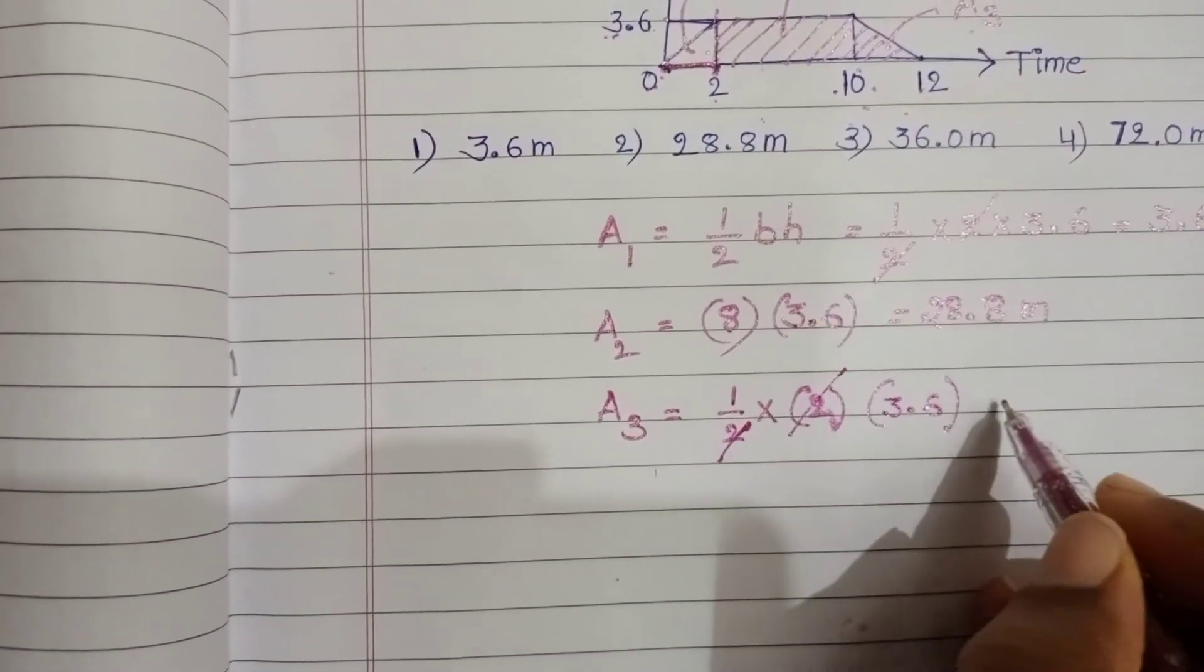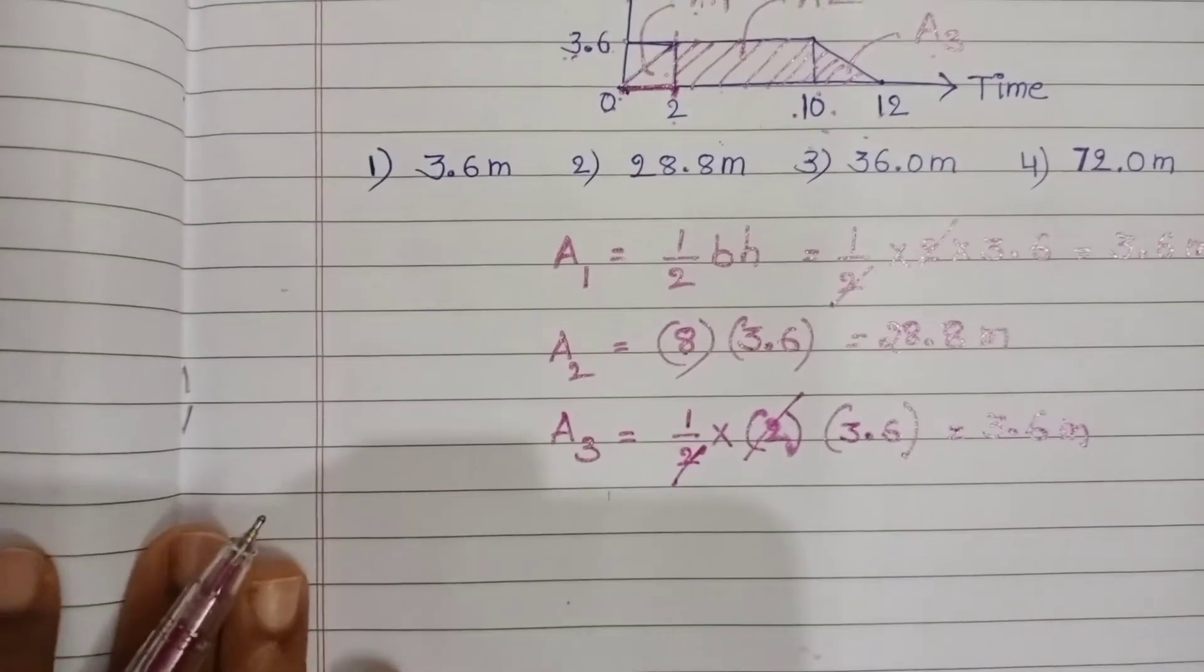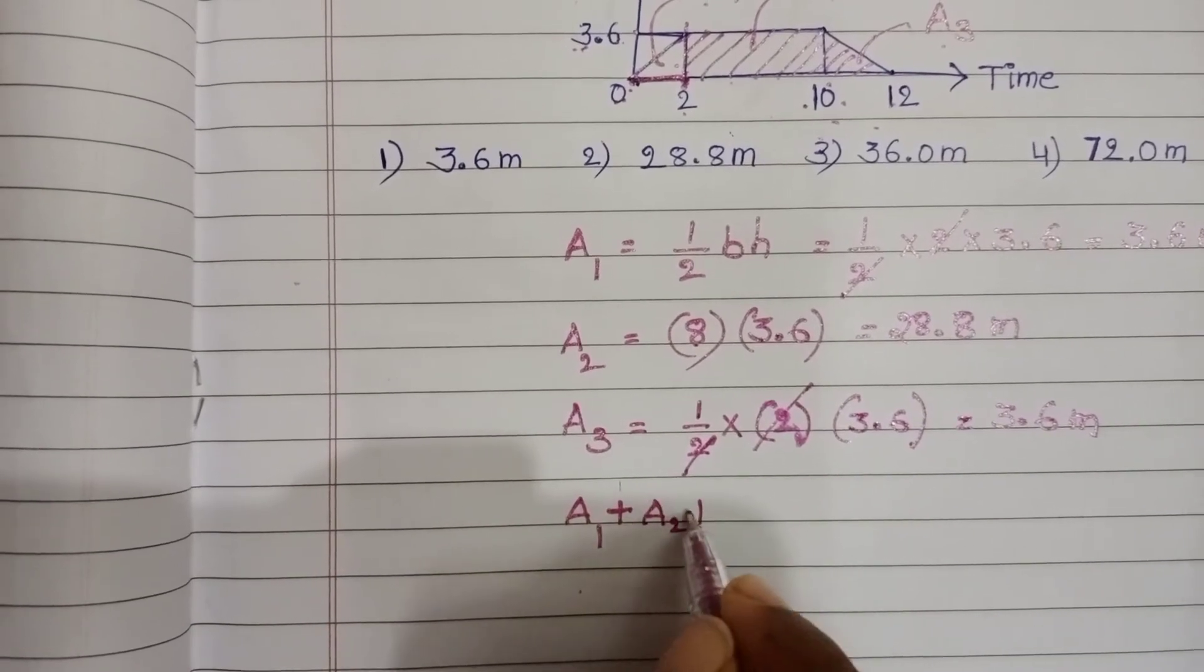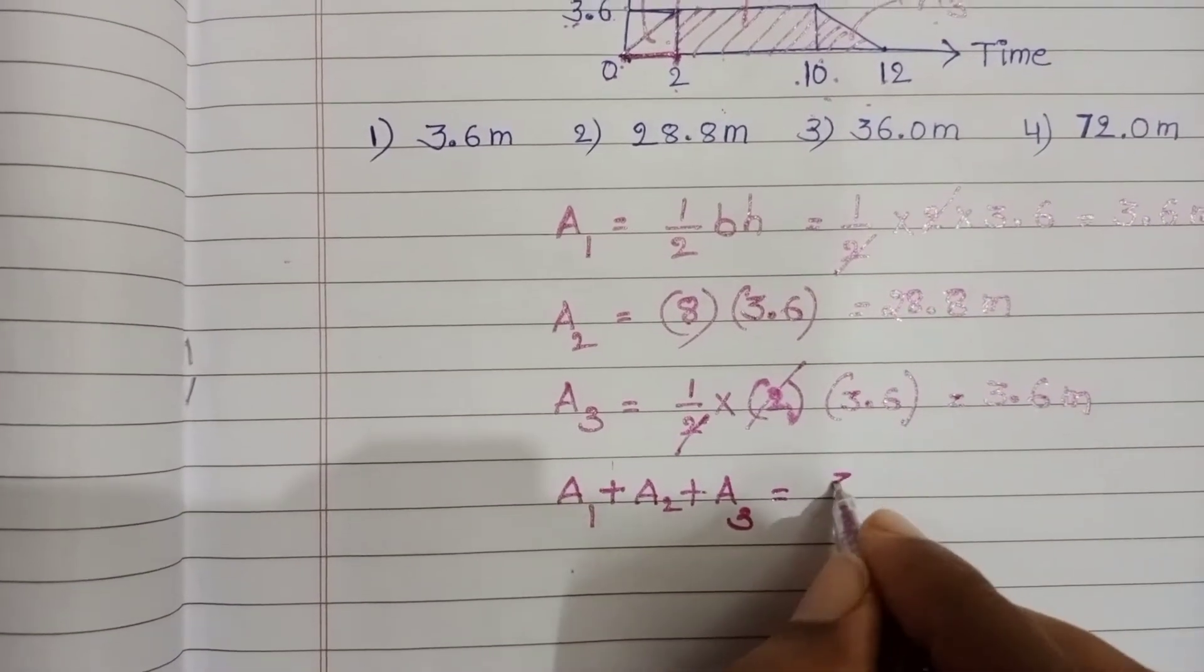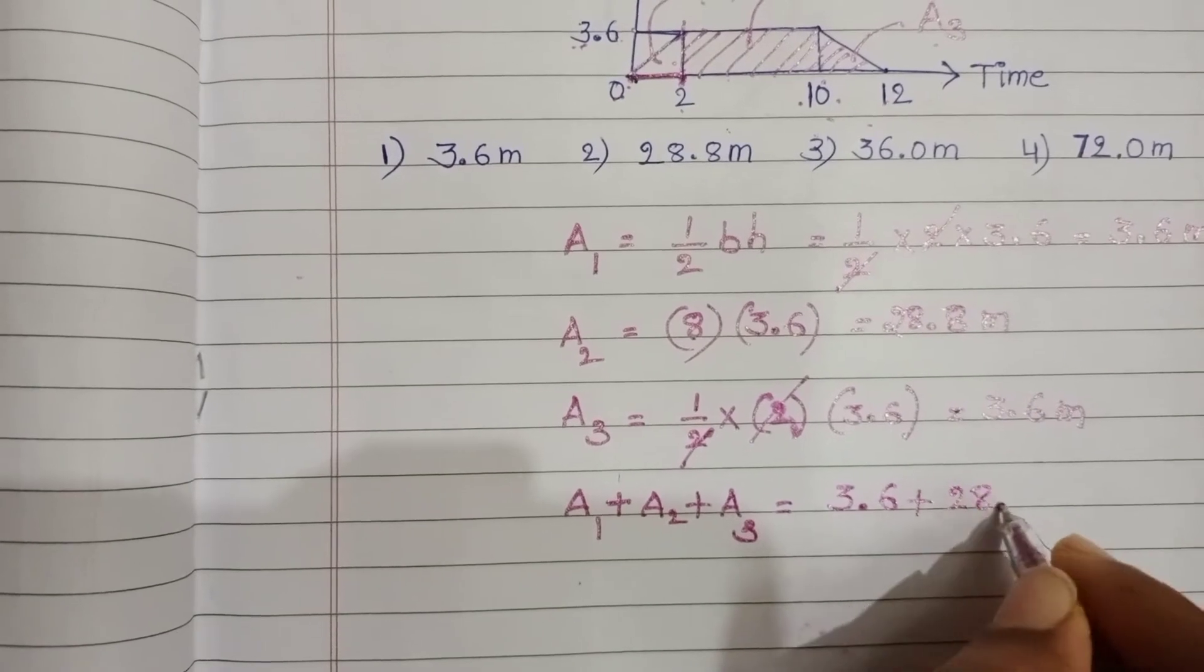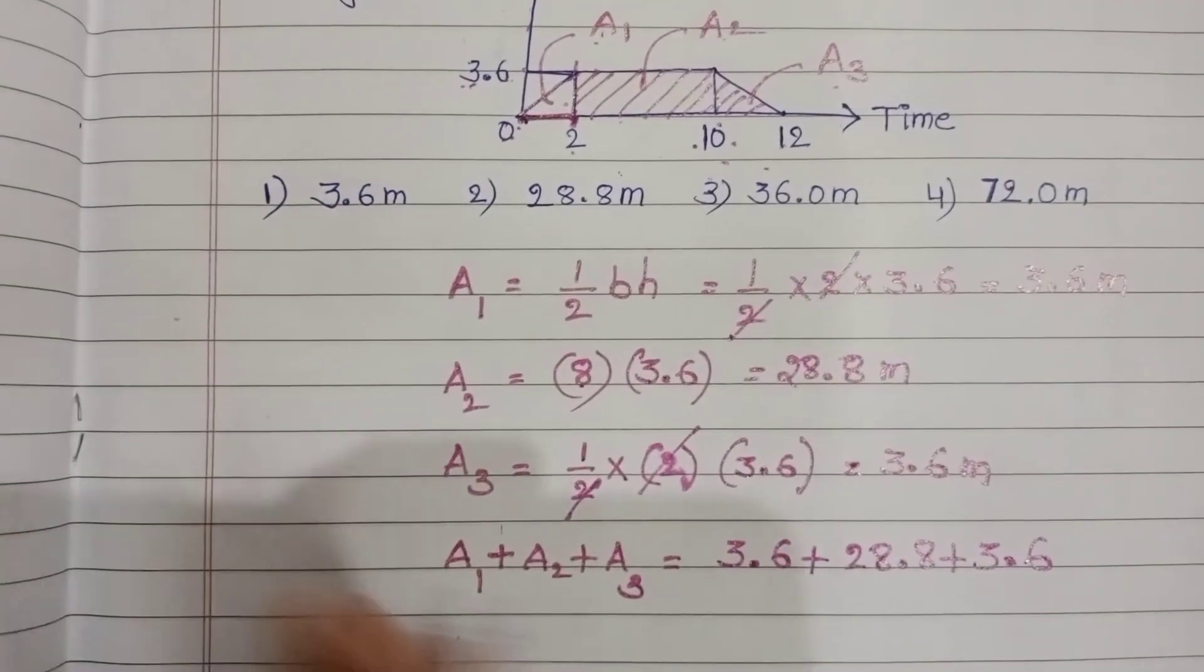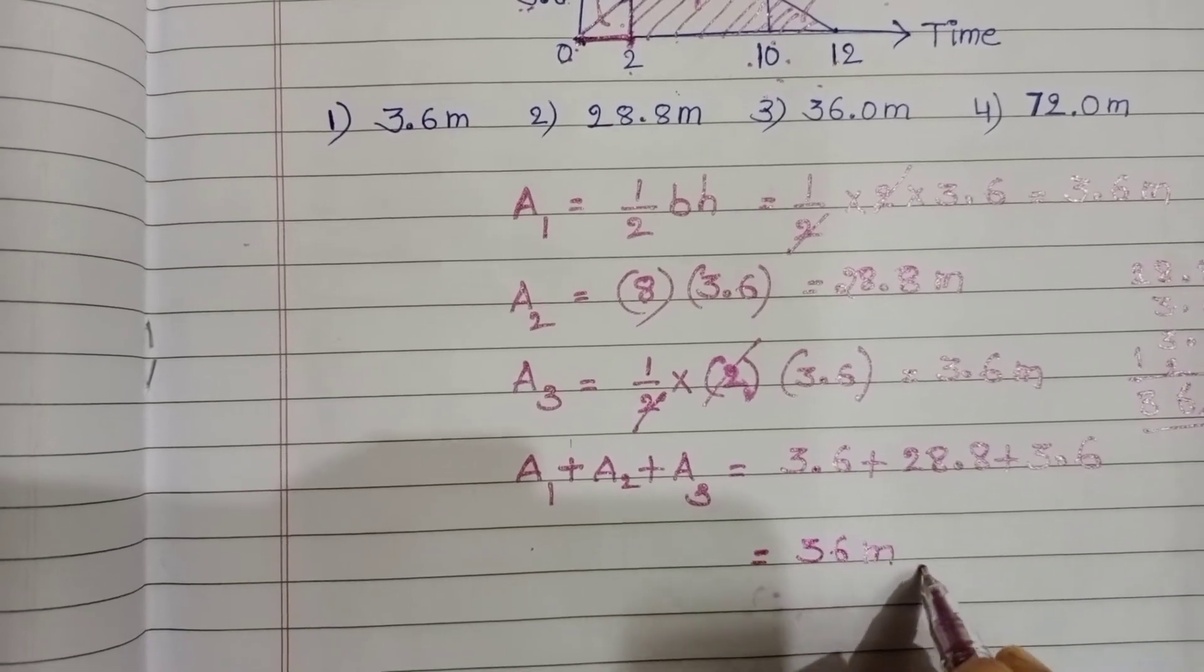So sum of A1 plus A2 plus A3 equals 3.6 plus 28.8 plus 3.6. Add these three, that equals 36 meters.